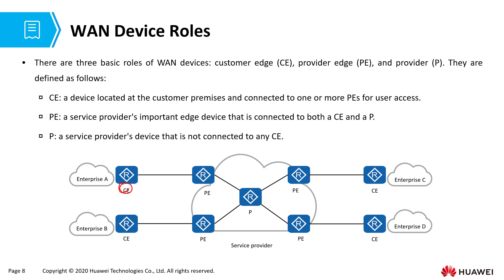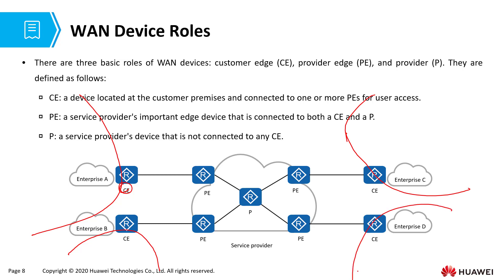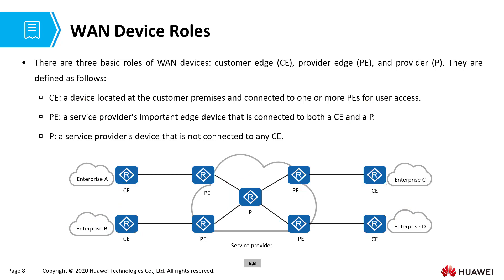Behind each CE router we have the internal network of Enterprise A, Enterprise B, Enterprise C, and so on. The CE is the edge device of the enterprise network, and the PE is the device at the edge of the service provider network. The single P router shown here represents the entire core of the service provider's network — in reality it's not always just one router; we're using this to illustrate the different roles of devices in a wide area network connection.